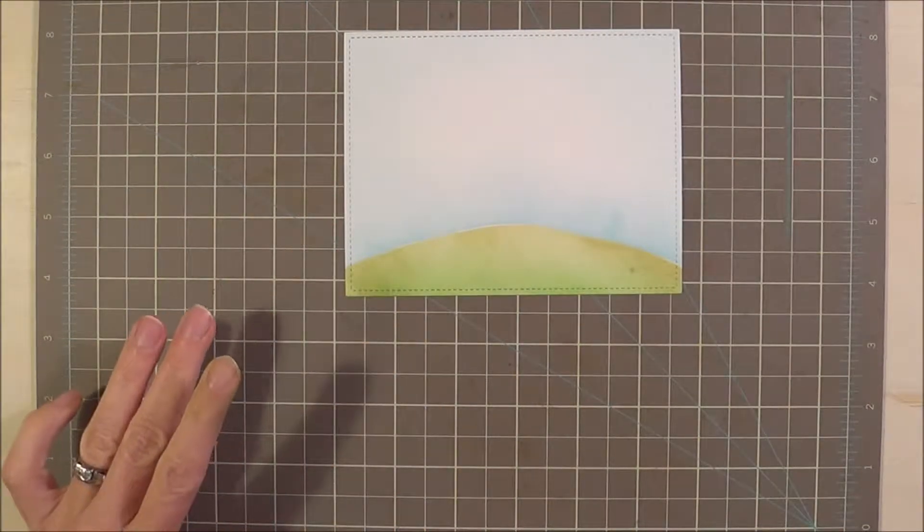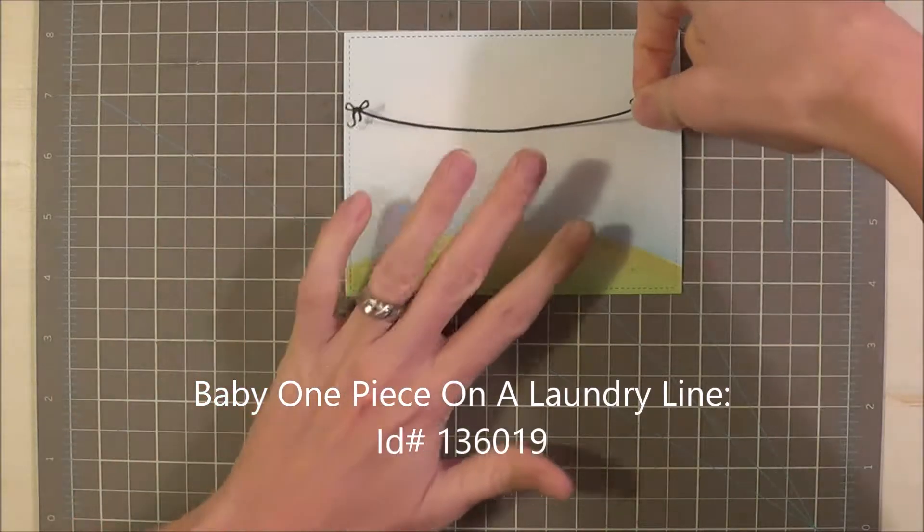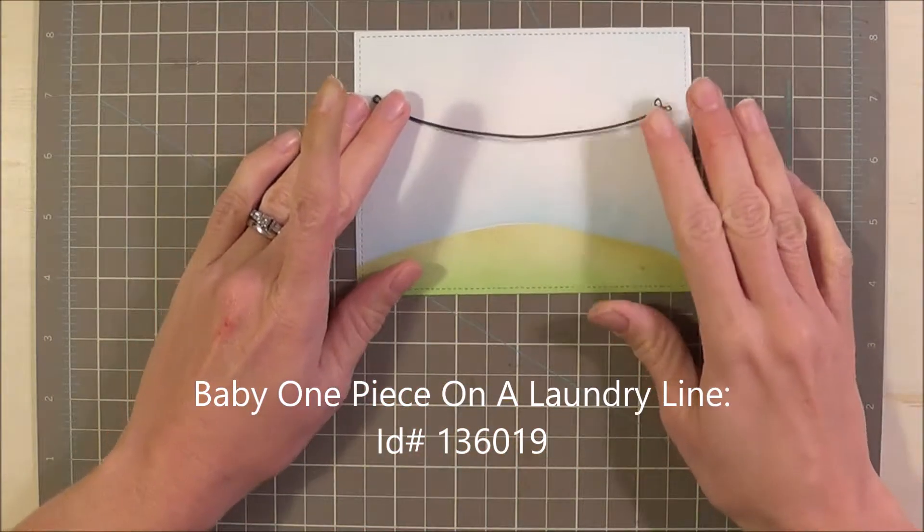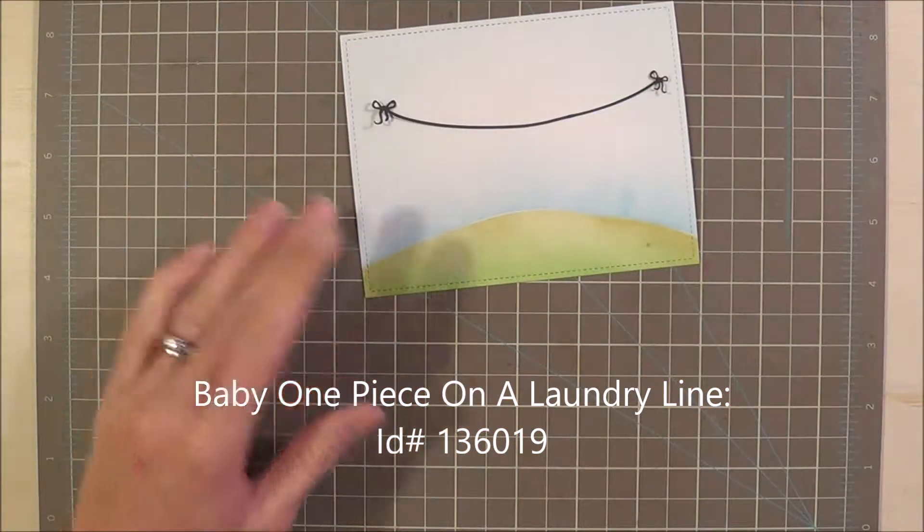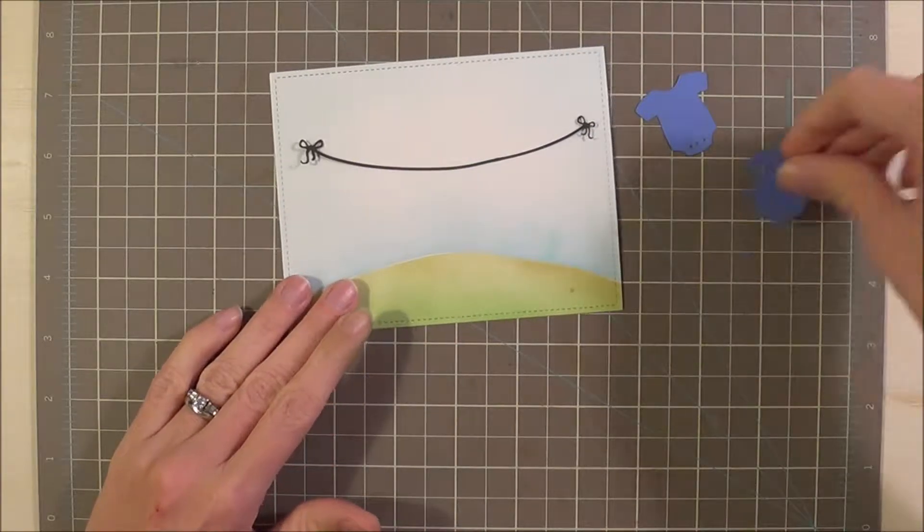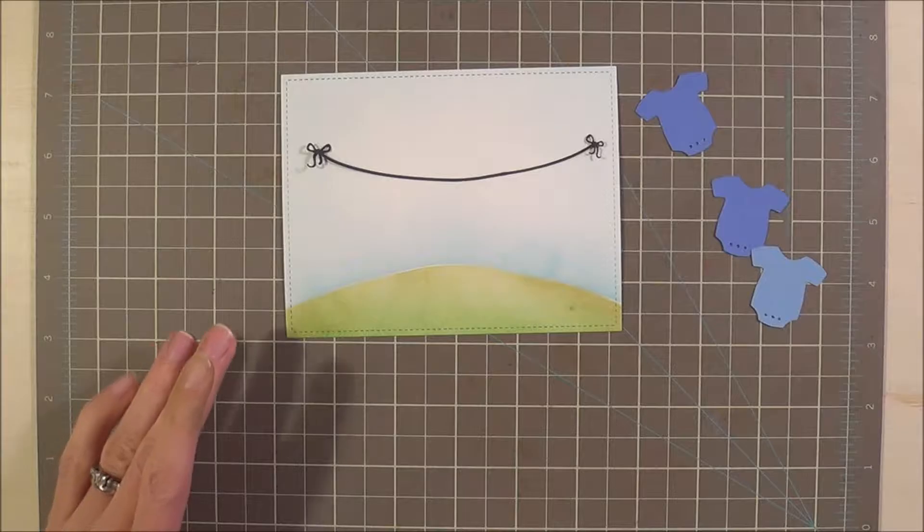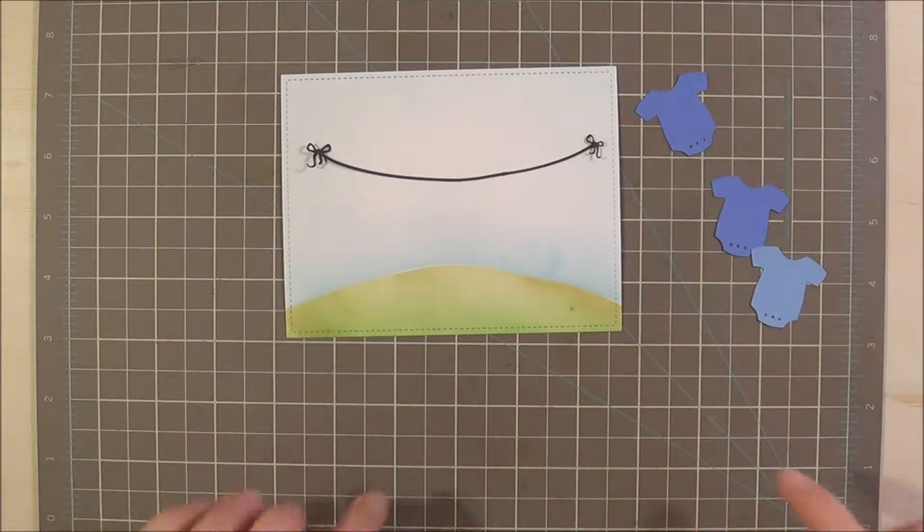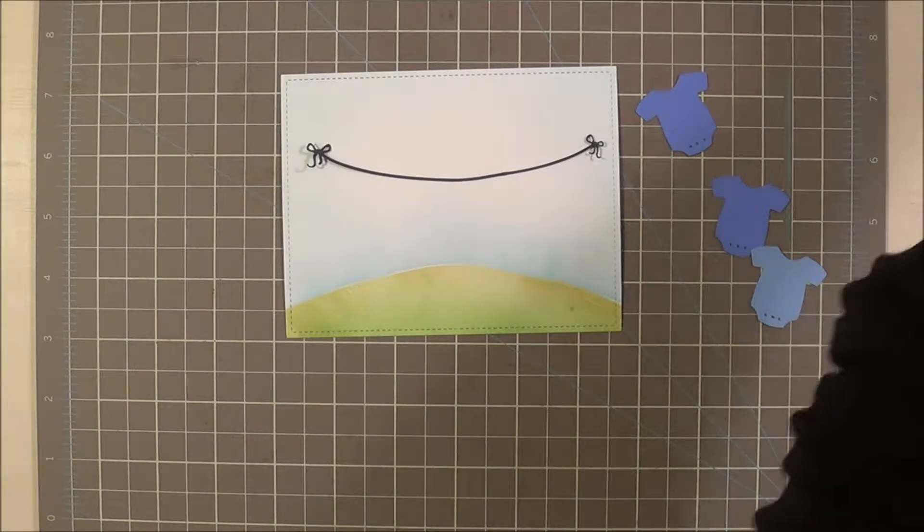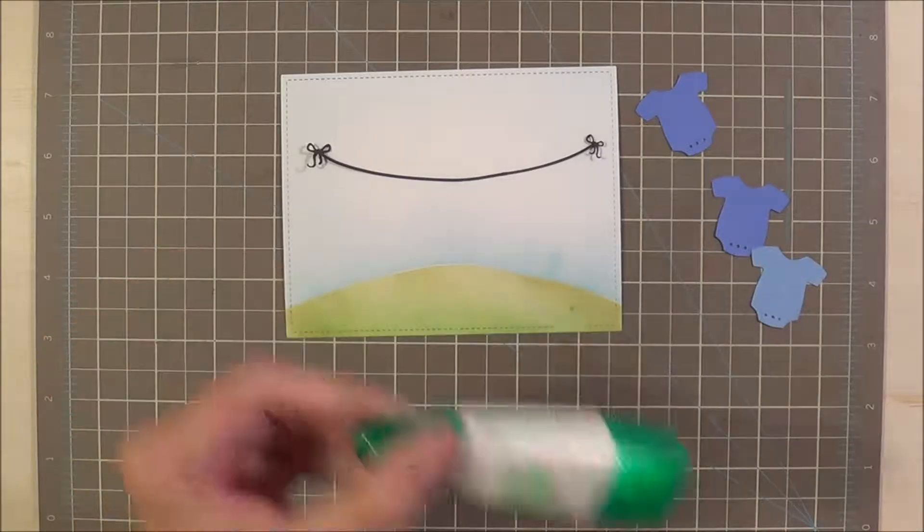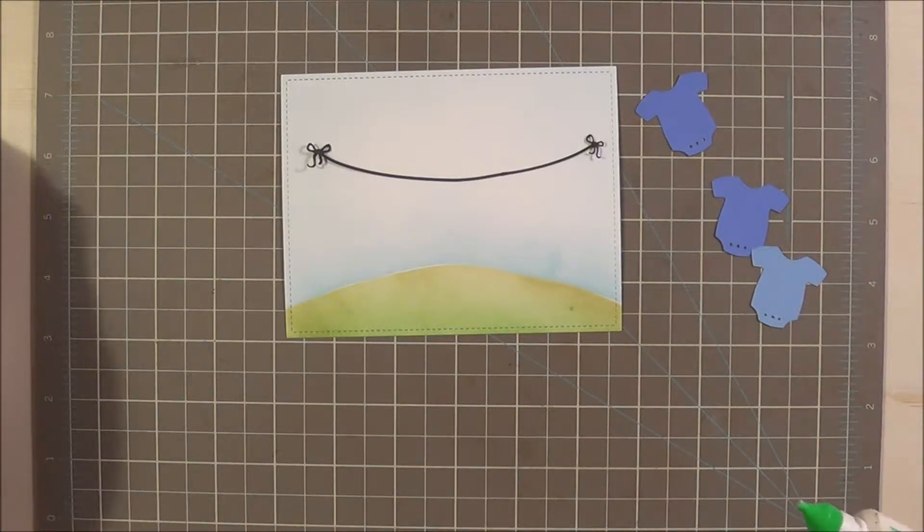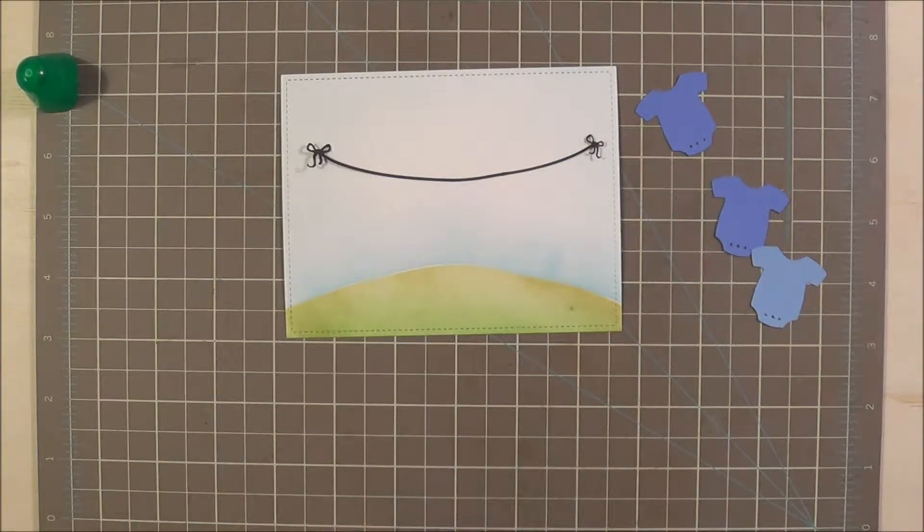So next I'm going to assemble my card. I have this really cute clothesline and then I have these little onesies I have cut out using my silhouette. And I really like that it came with the little clothes pegs that are just off camera right over there. I'm going to be using some Tombow multi-adhesive for this. And here we go.